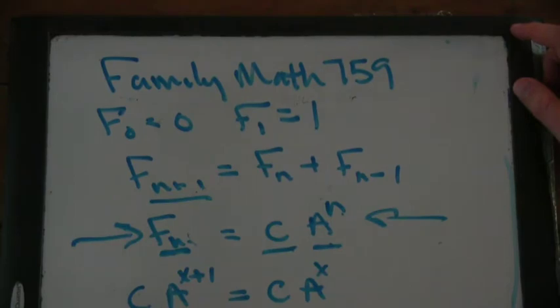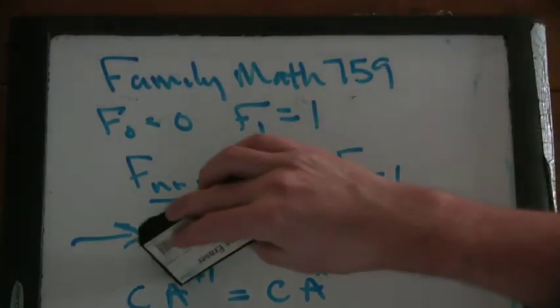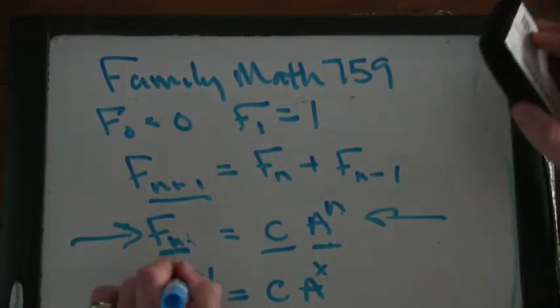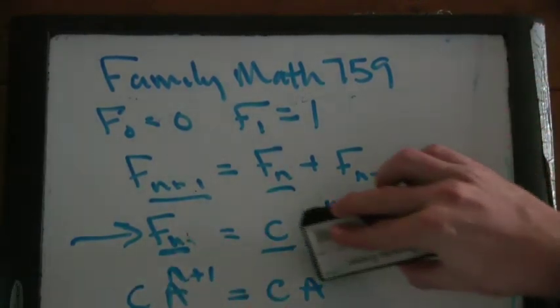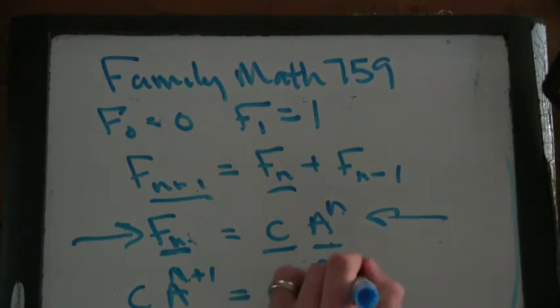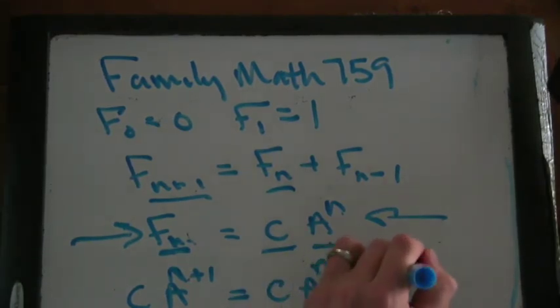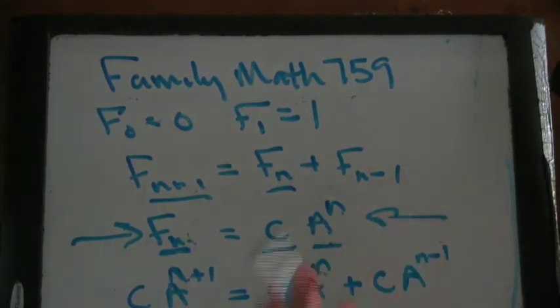Our nth Fibonacci number is a constant times a to the n. So that means the n plus 1 is going to be that constant times a to the n plus 1. This one is going to be a constant times a to the n. And this is going to be a constant times a to the n minus 1.